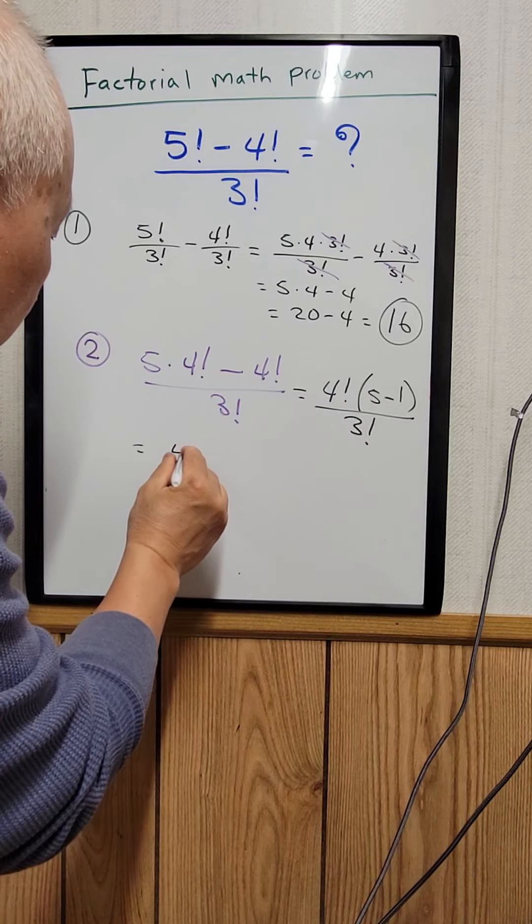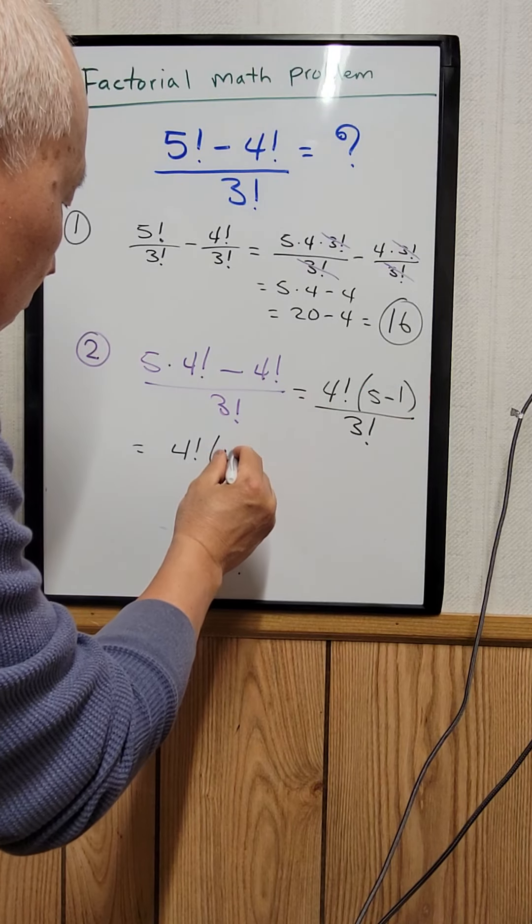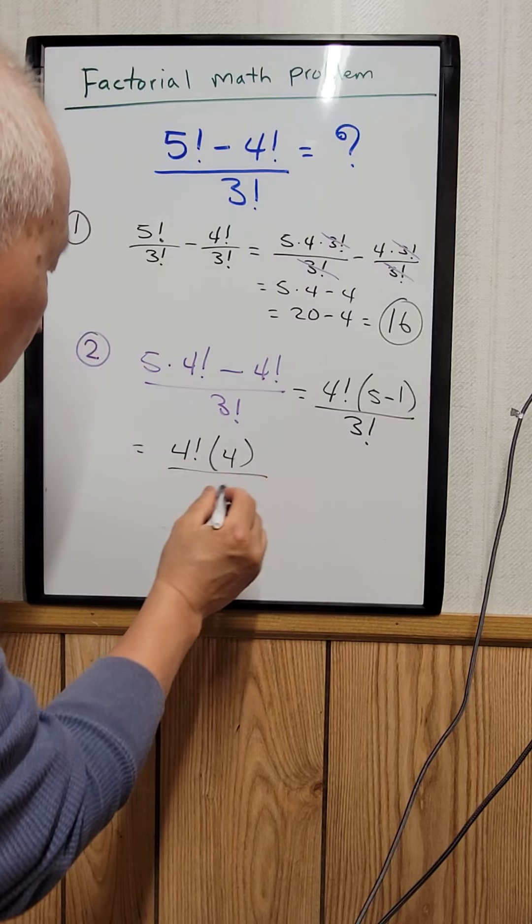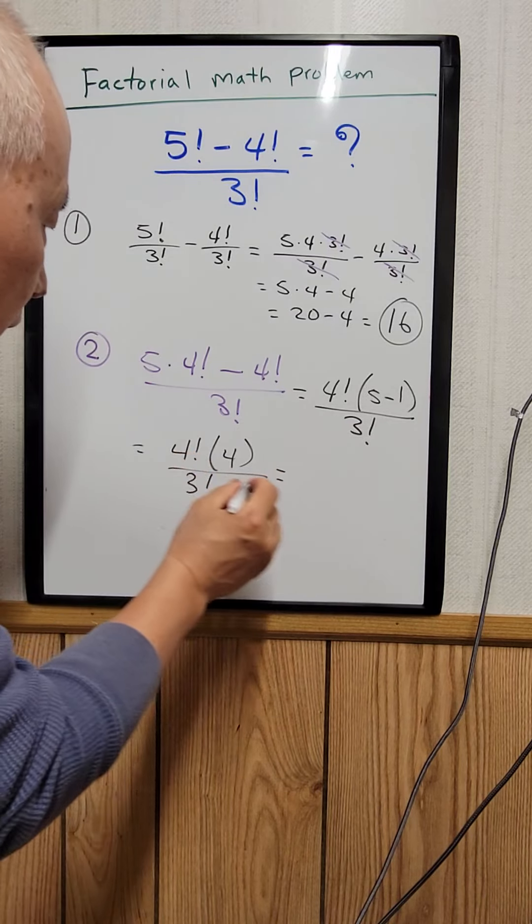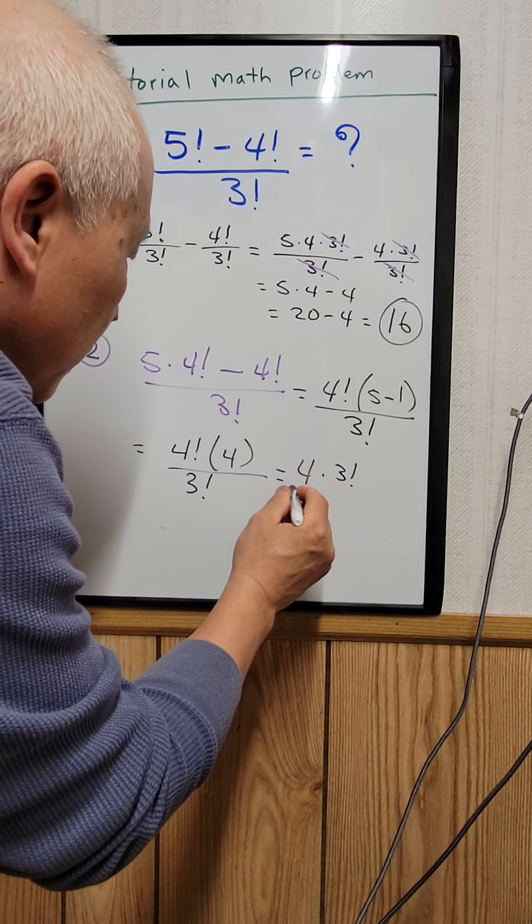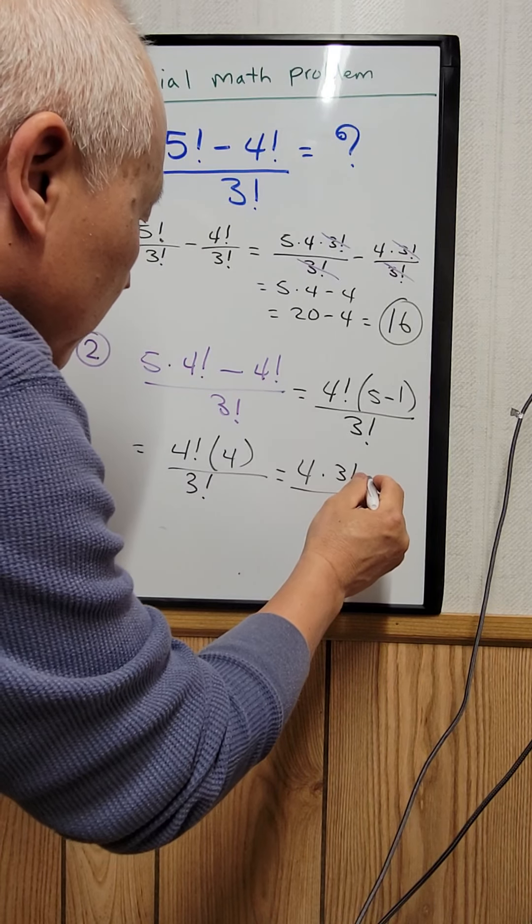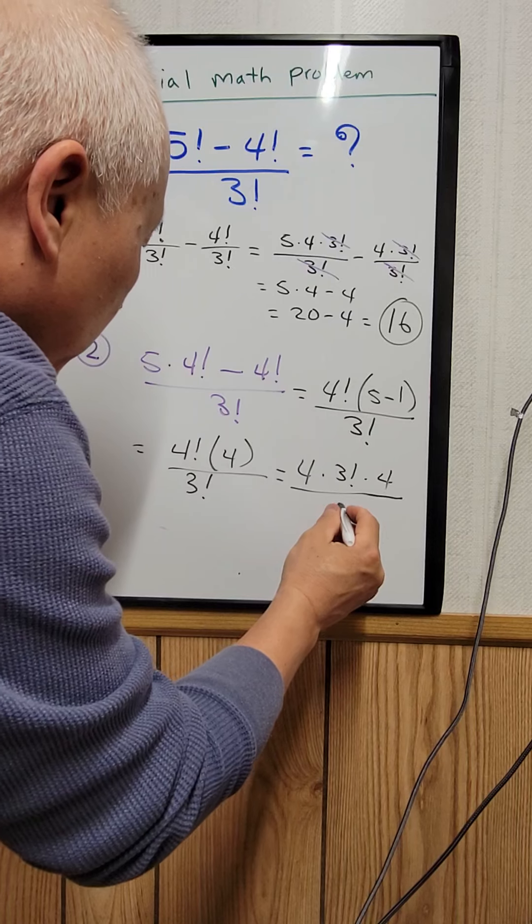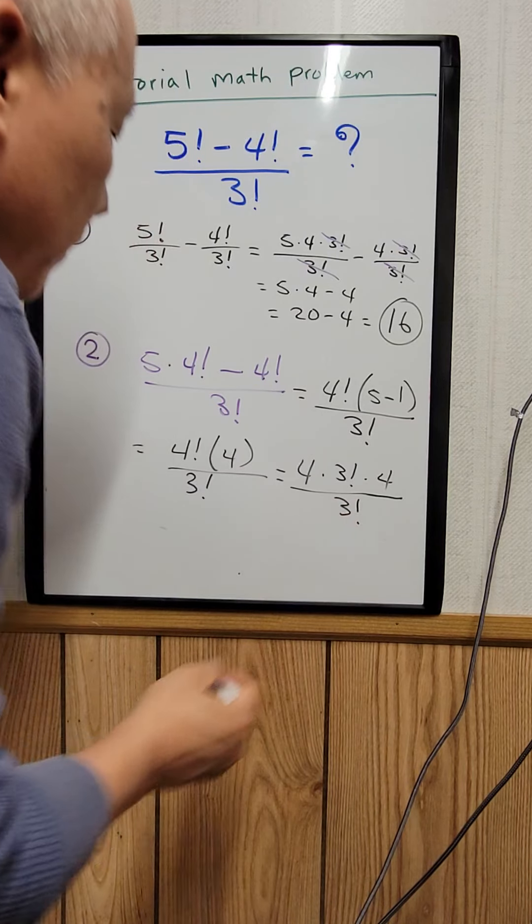5 minus 1 equals 4, so you have 4 factorial times 4, divided by 3 factorial. 4 factorial can be written as 4 times 3 factorial, so this becomes 4 times 3 factorial times 4, divided by 3 factorial.